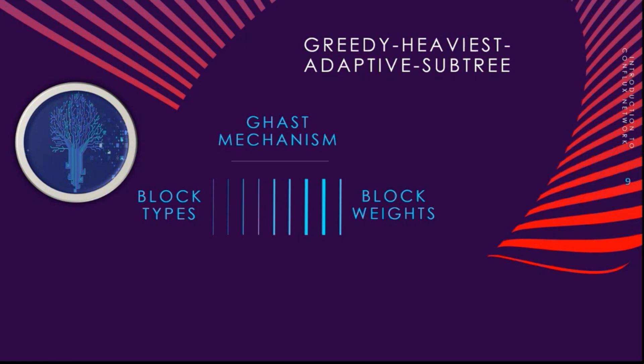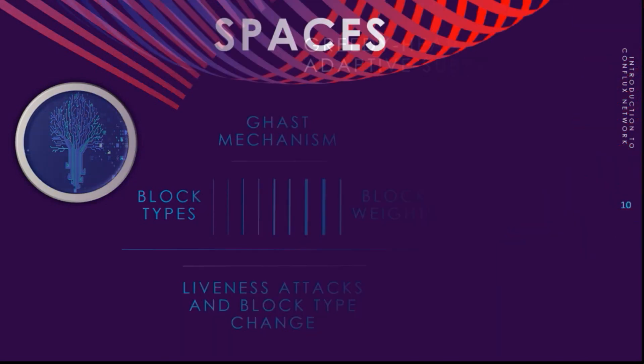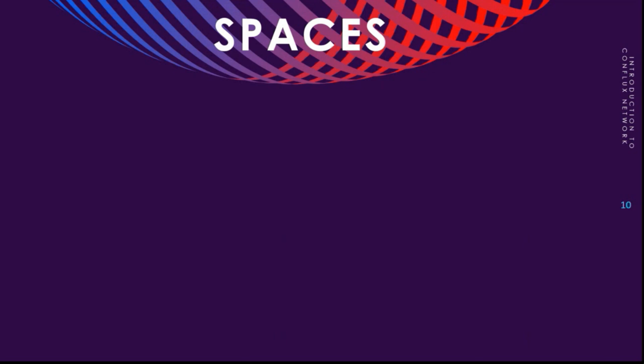Next we will talk about the Spaces. Conflux has two independent spaces: Core Space and eSpace. Core Space is the original chain and provides more network capacity. It wasn't called Core Space before. We changed the name after eSpace was created, but before it was only Conflux network.